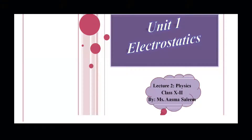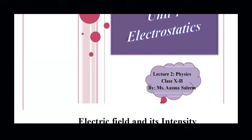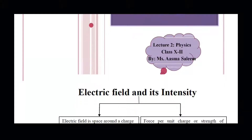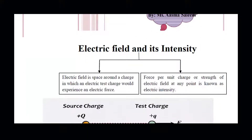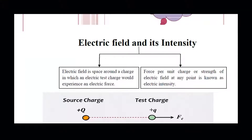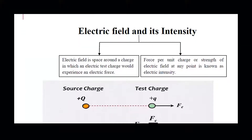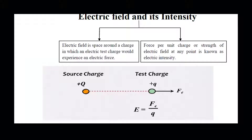This is lecture number two from unit number one, electrostatics. In the first lecture we already discussed the introduction to electrostatics and Coulomb's law. Our second topic is electric field and intensity. First we define the electric field, then discuss intensity. Electric field is the space around charges in which an electric test charge experiences an electric force, and intensity is its quantitative analysis.